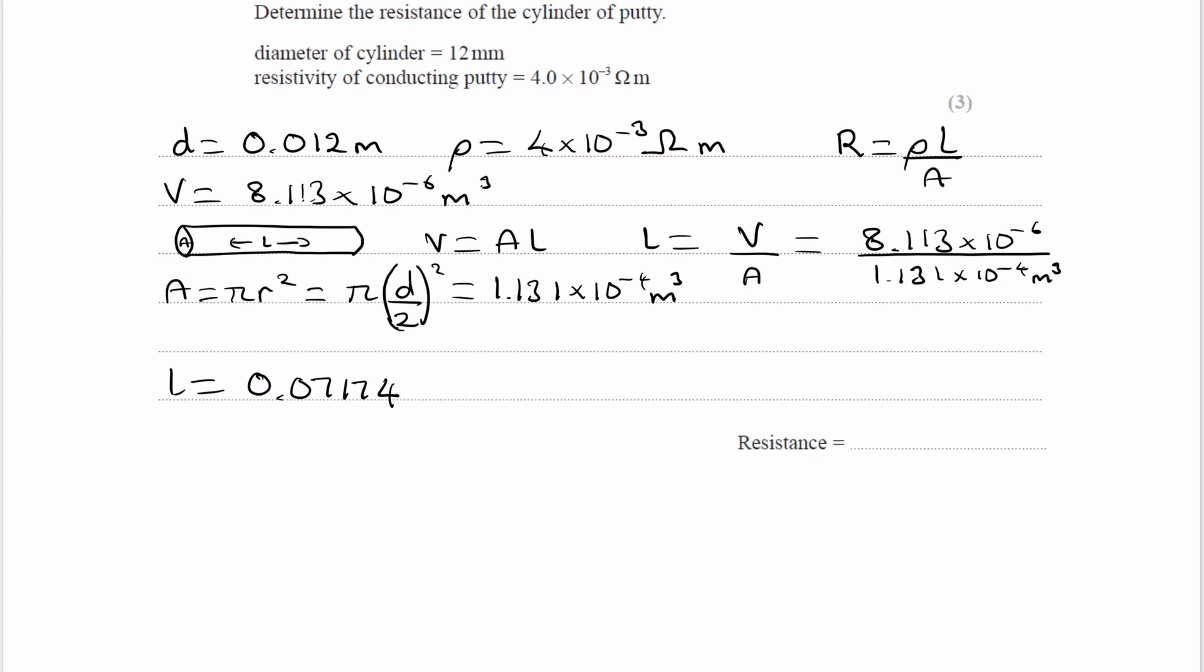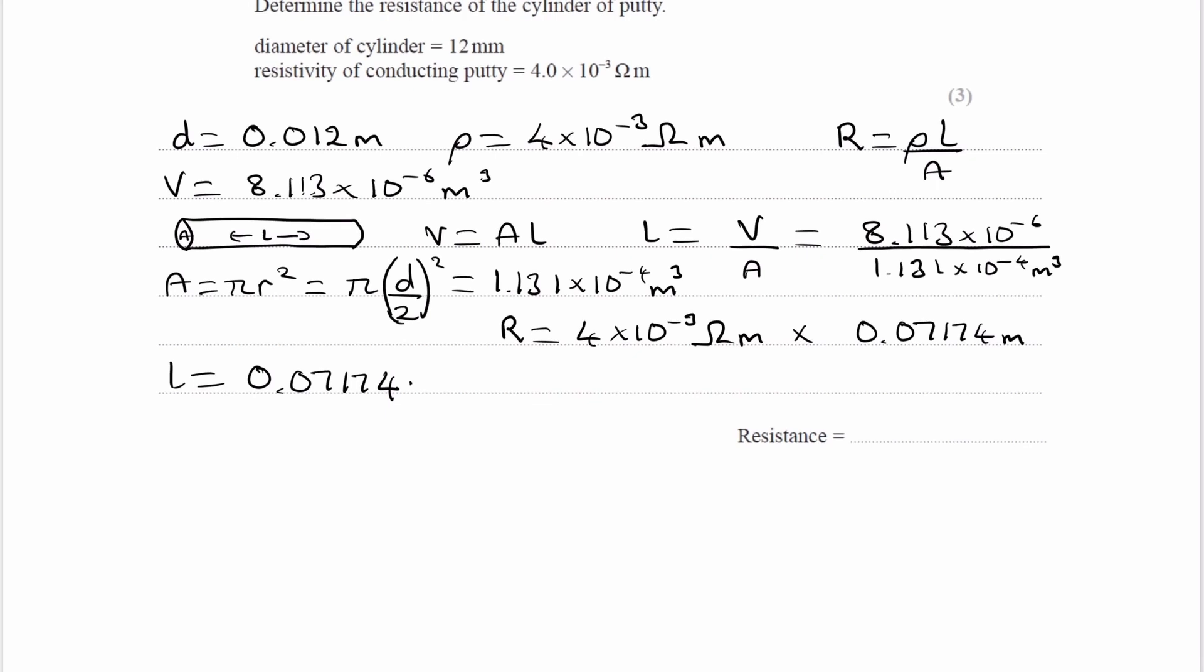And now we can put this into our equation. So resistance would be resistivity times length over area. It'll be 4 times 10 to the minus 3, and multiply that by the length, 0.07174. And then finally divide that by the cross-sectional area. We type this in and we end up with 2.54 ohms.